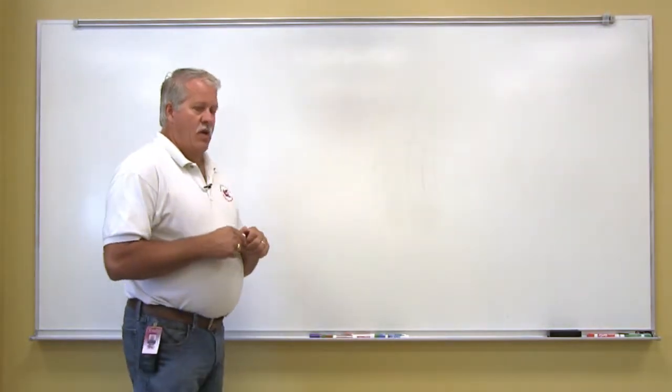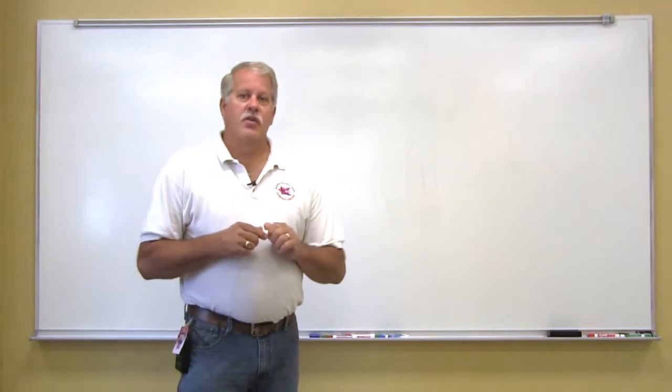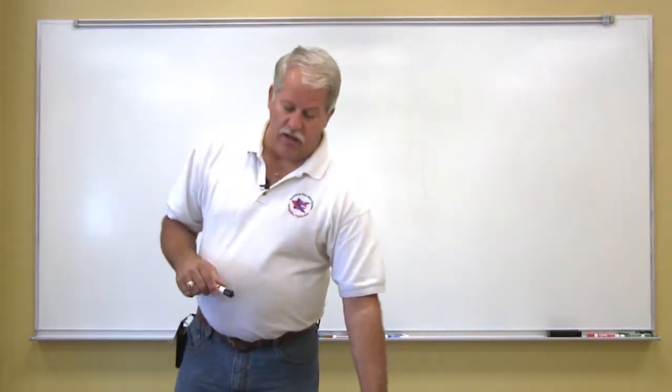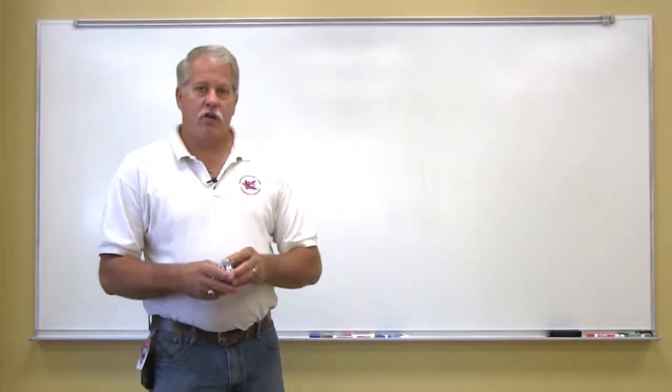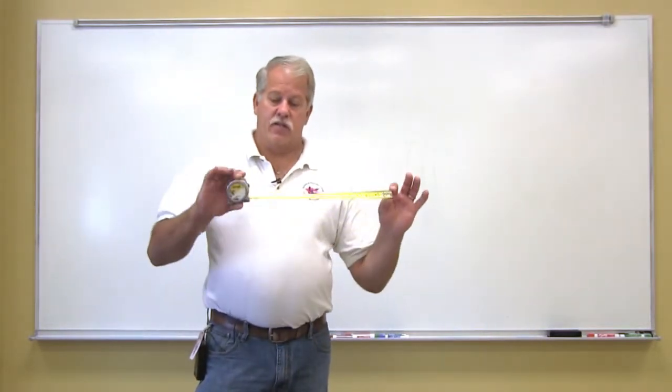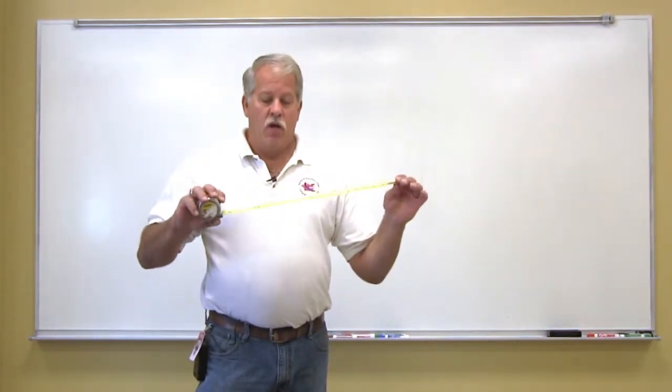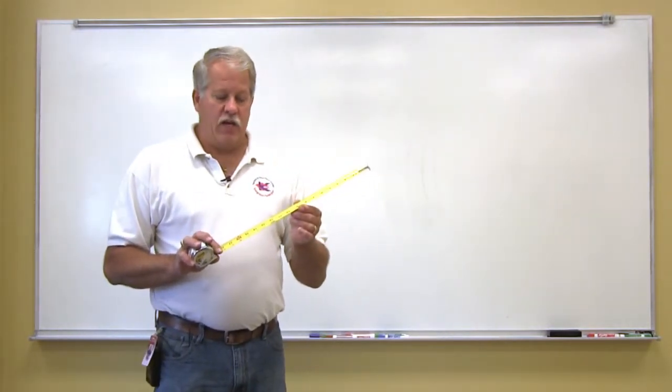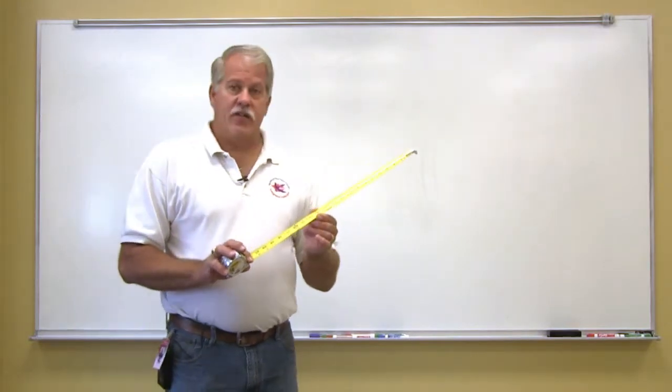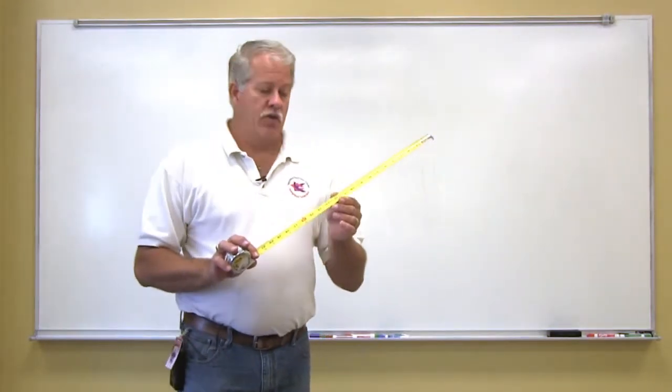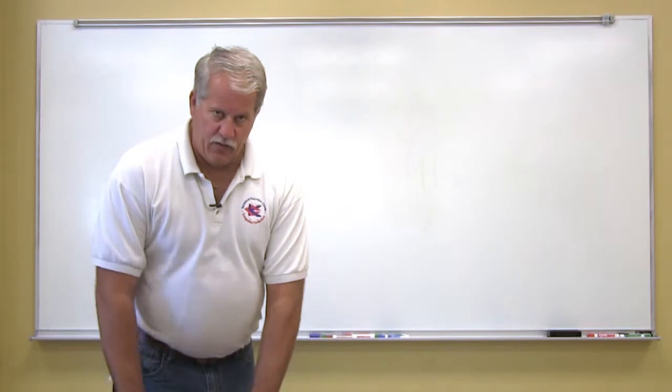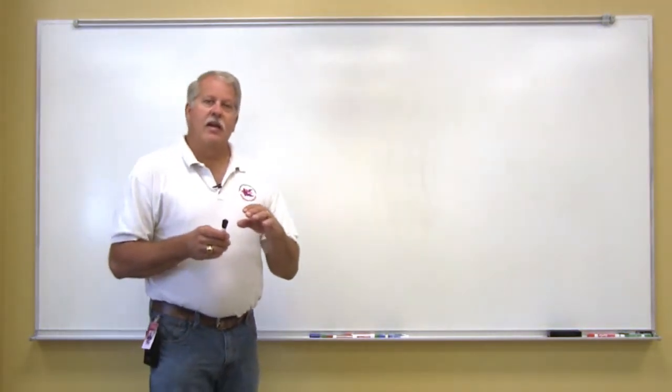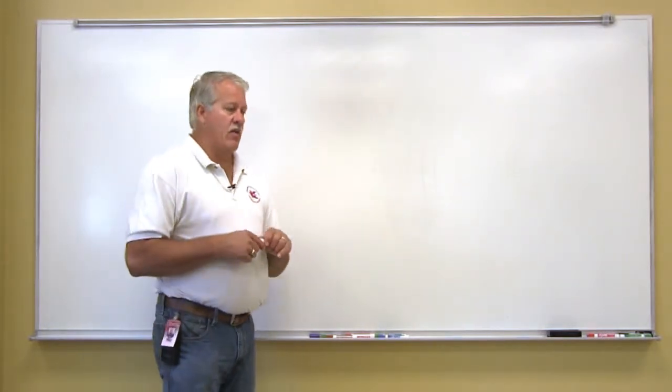In reading a tape measure, the very first thing that we need to decide is what the tape measure is graduated in. Different tape measures are graduated in different things. This small 12 foot tape measure, the first foot is graduated in 30 seconds of an inch. After that it's graduated in sixteenths of an inch. For the purpose of our video today, we are going to talk about a ruler that's graduated in sixteenths of an inch.